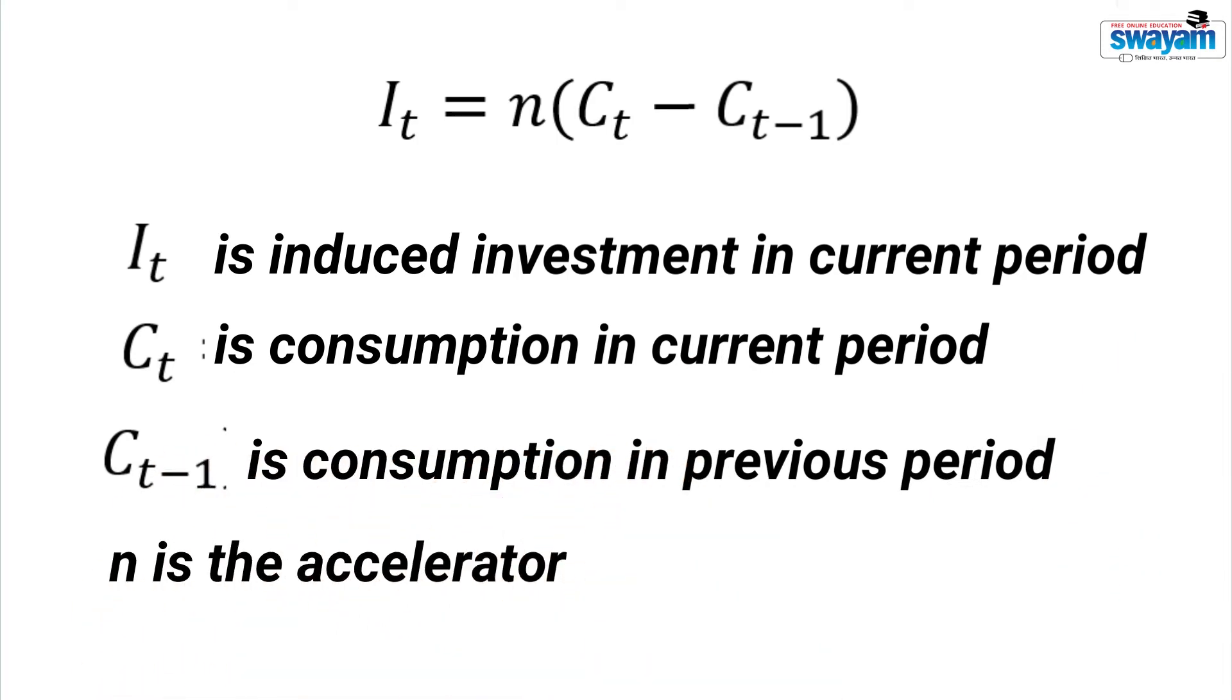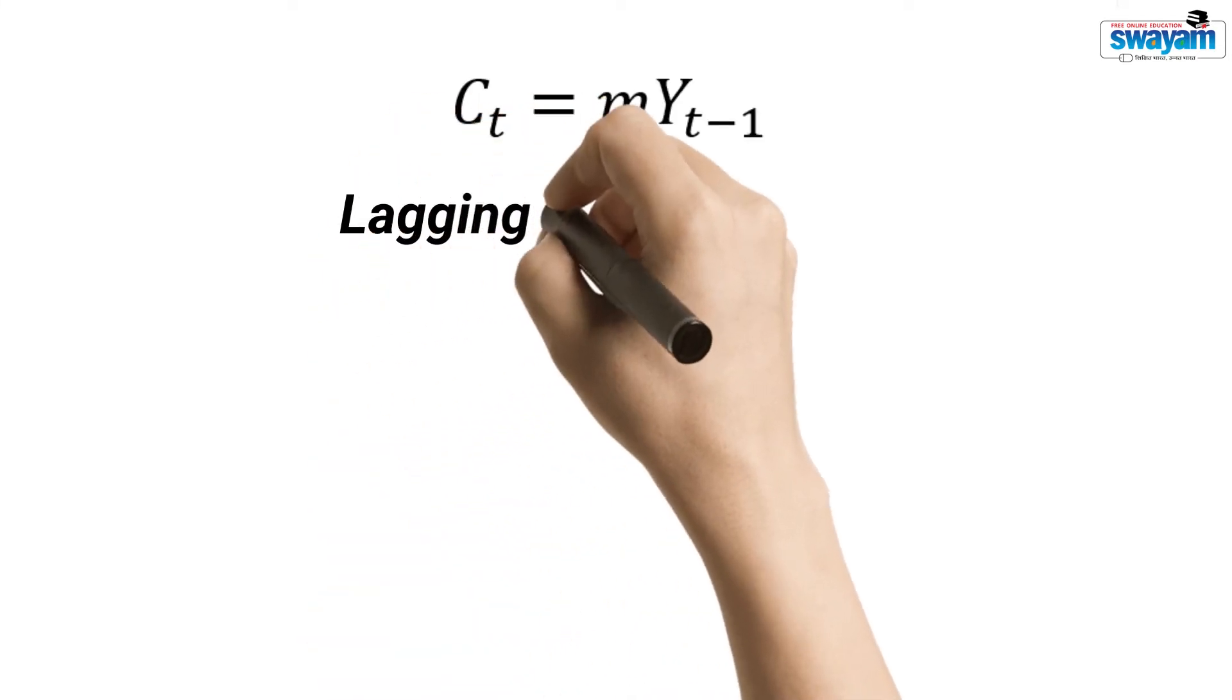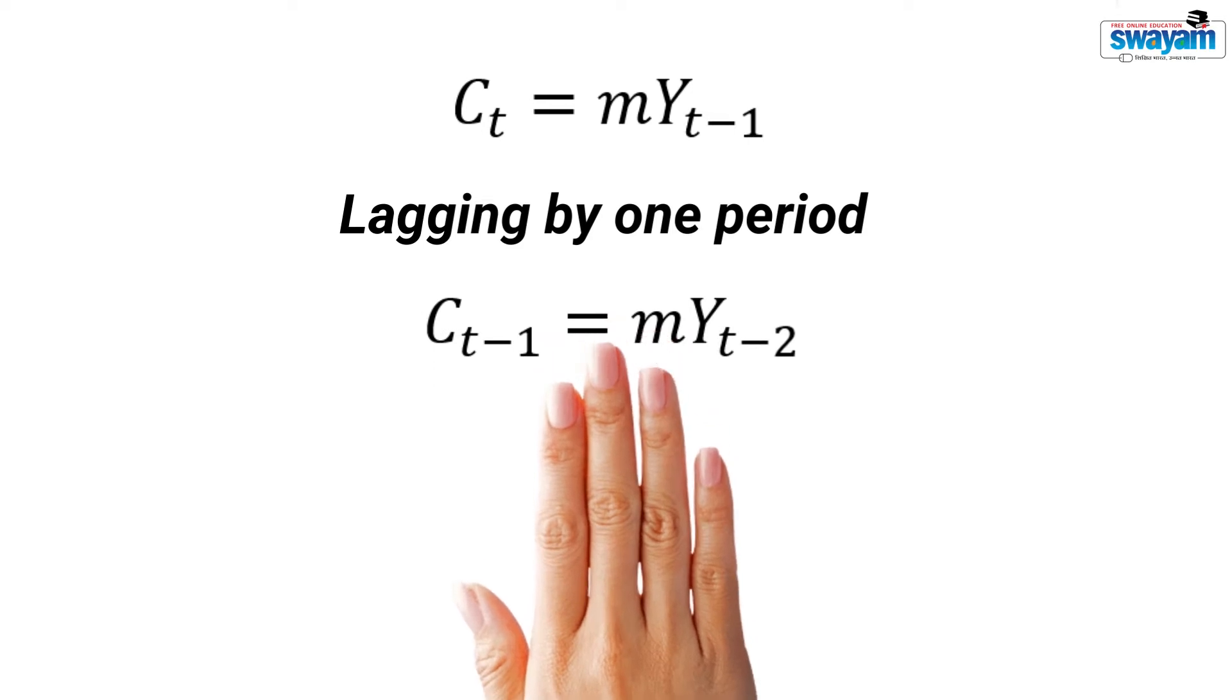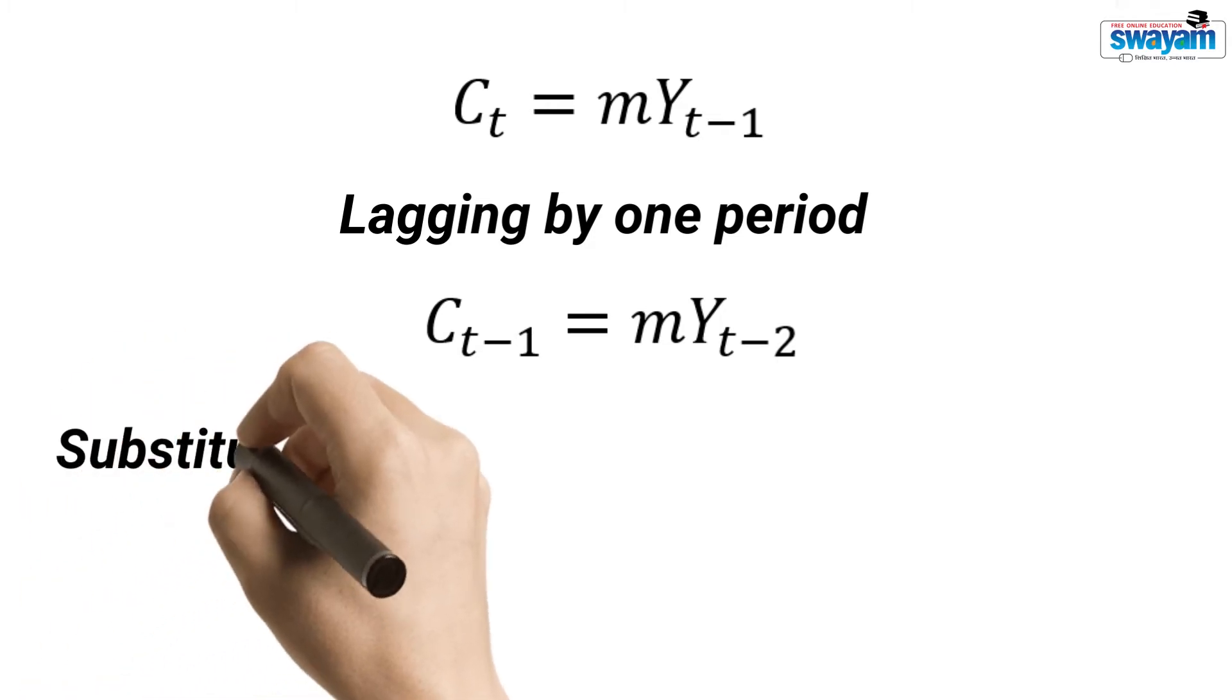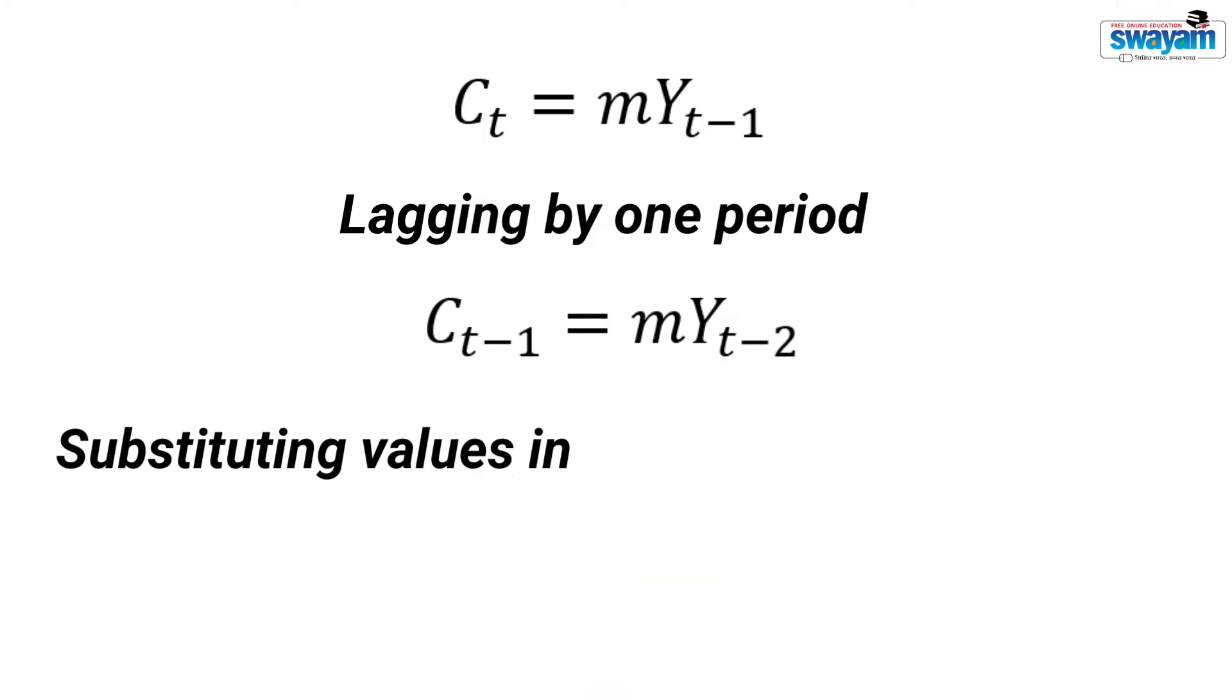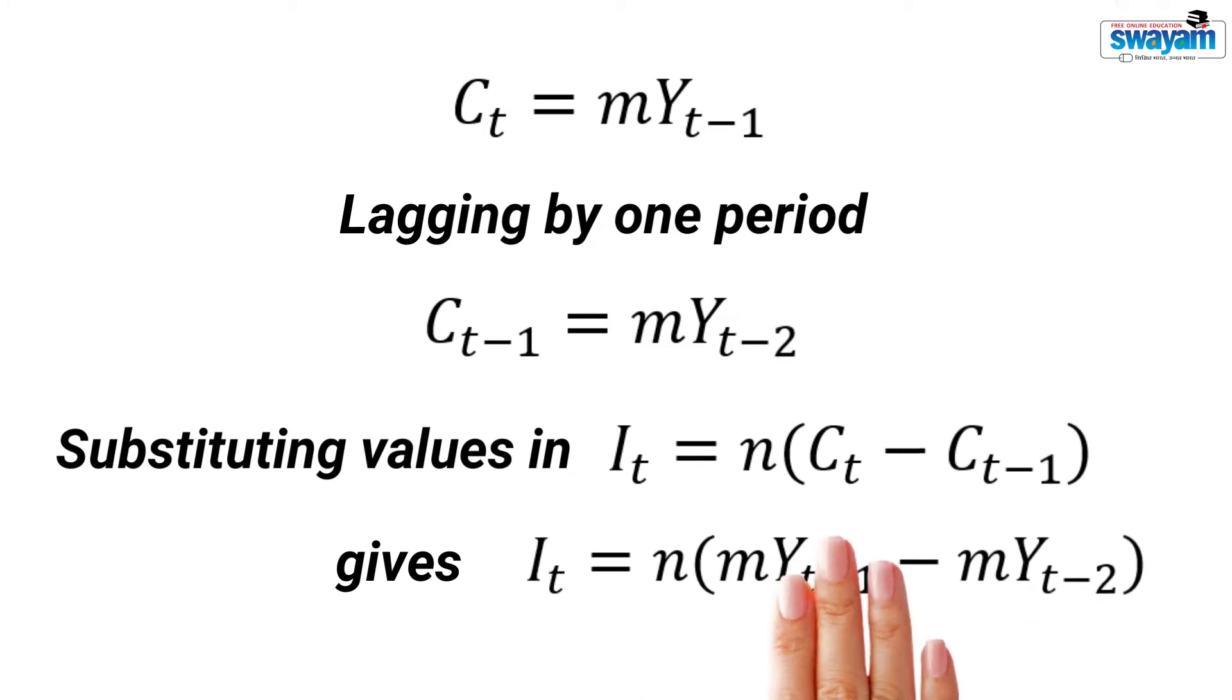Now consider the consumption function again and lag it by one period. This gives Ct-1 equals MYt-2. Substituting the value of current consumption and the value of consumption in the previous period in the investment function gives this result.